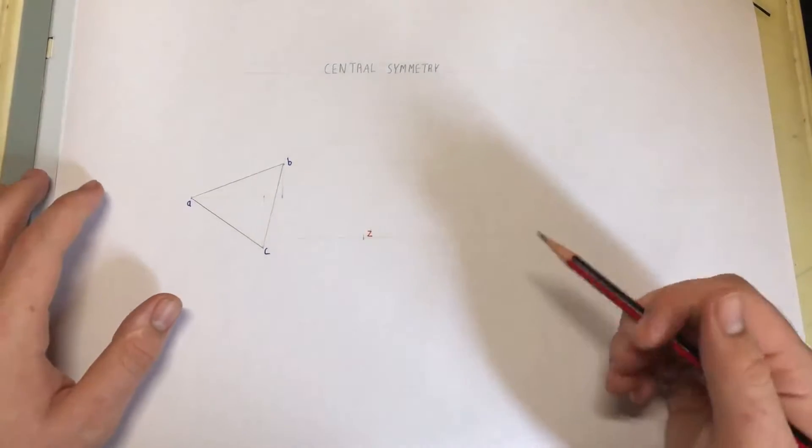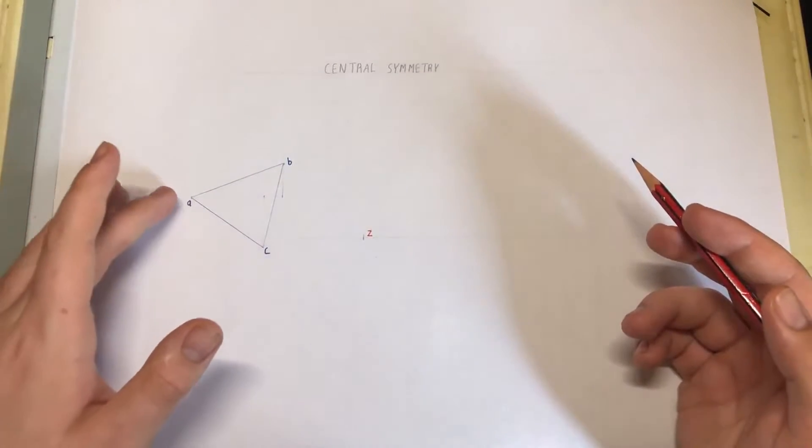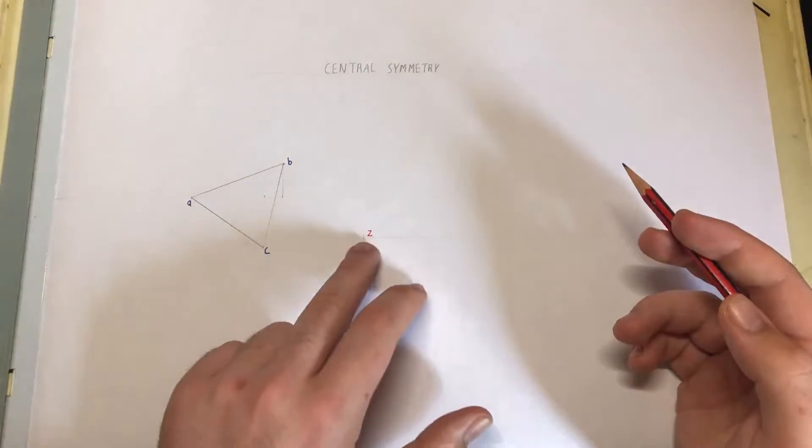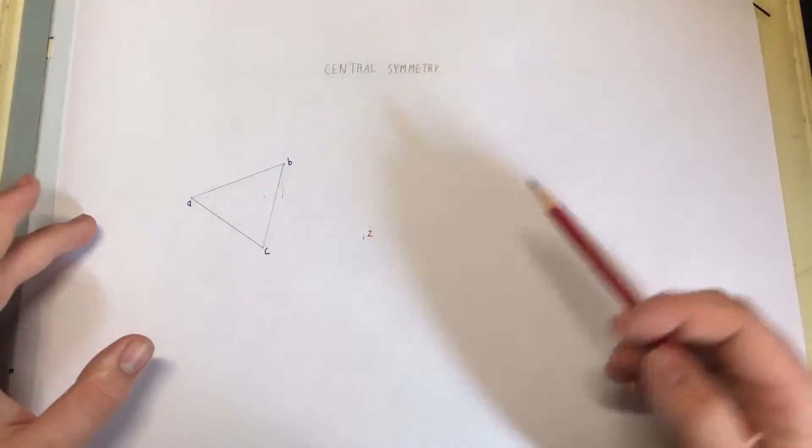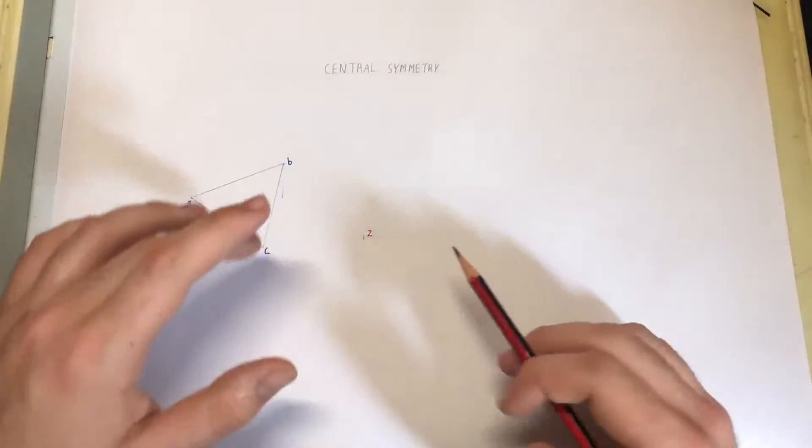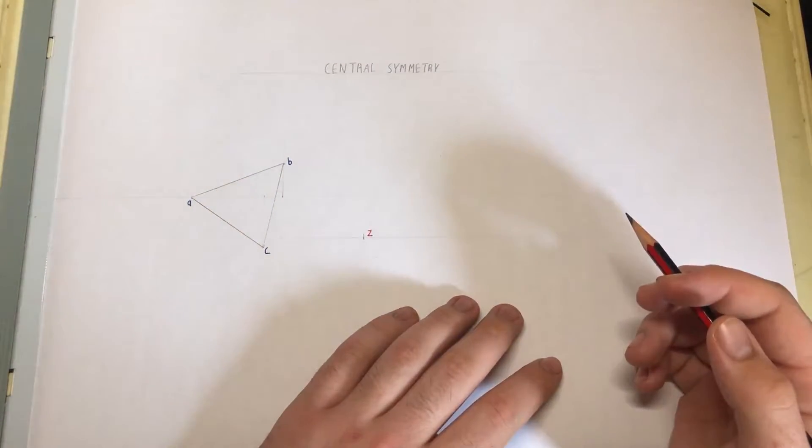We're going to take our triangle ABC, draw our lines from A, B, and C through point Z and extend them out, and then we're going to swing the distance from Z to each of the points to get our shape on the other side.